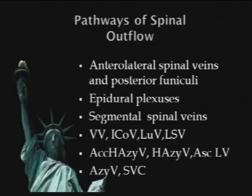The spine drains from anterolateral spinal veins and posterior funiculi into the epidural plexuses. These have segmental spinal veins from the top to the bottom of the spine — vertebral veins, intercostal veins, lumbar veins, lateral sacral veins — which then drain into the accessory hemiazygous, the hemiazygous, ascending lumbar veins, ultimately to the azygous vein and the superior vena cava. We have to look in all of those veins to figure everything out.